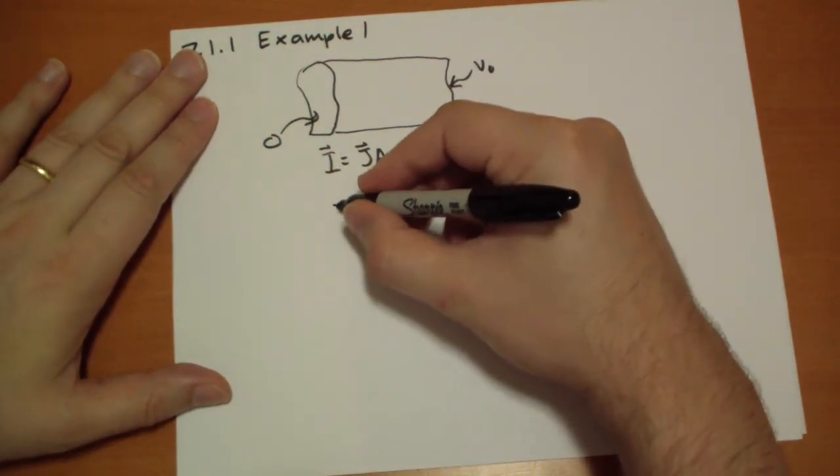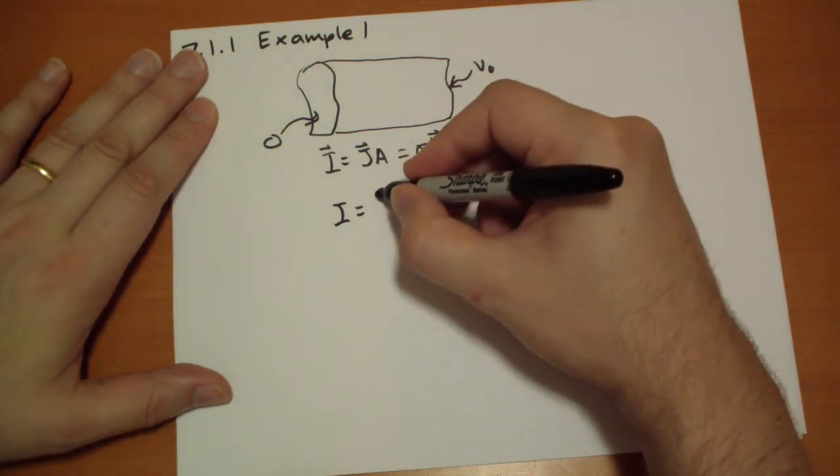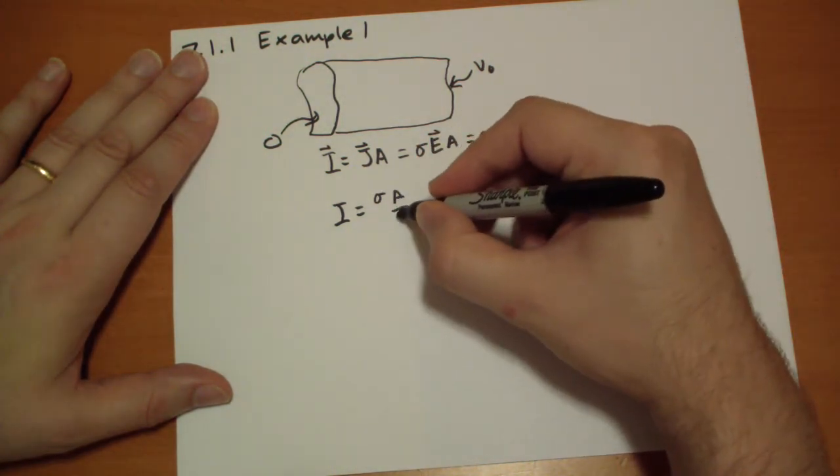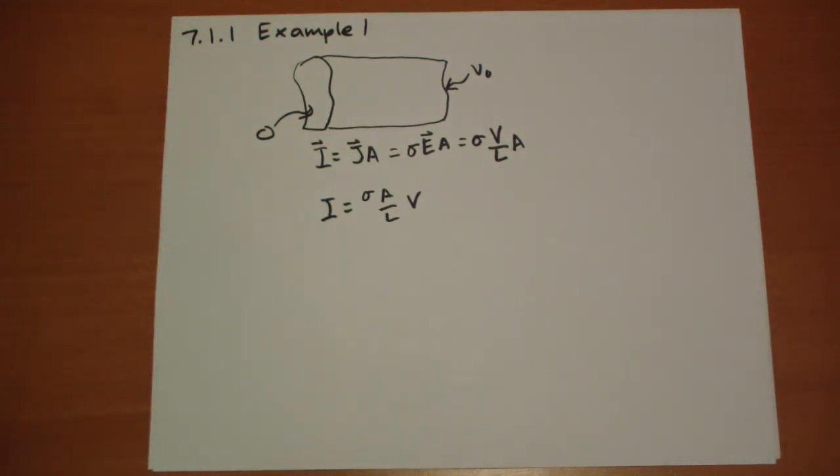And so we get this nice little relation that the current is equal to sigma A over L times the potential difference between the two. That was easy. Let's do Example 2 next. Thanks for your time.